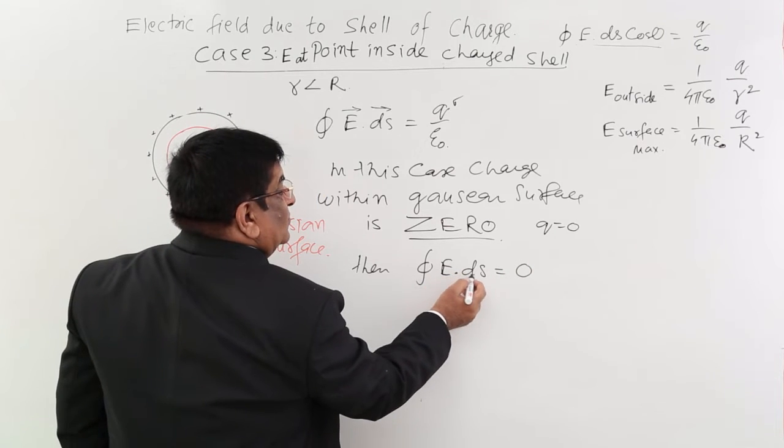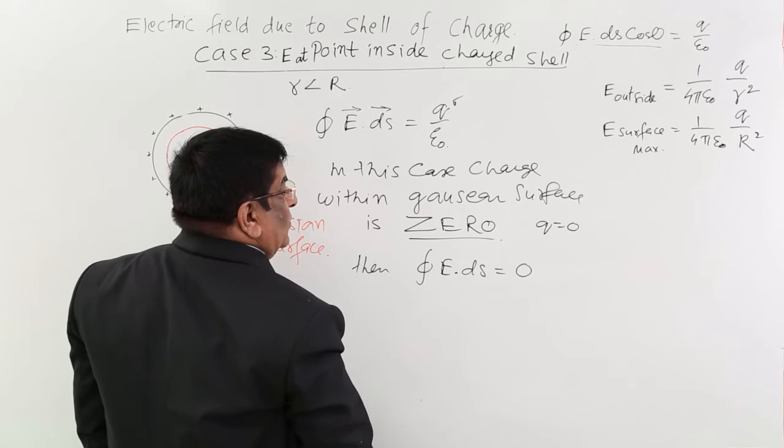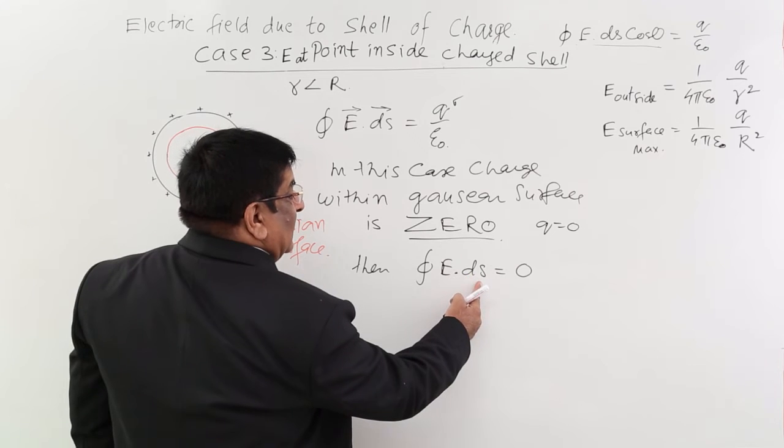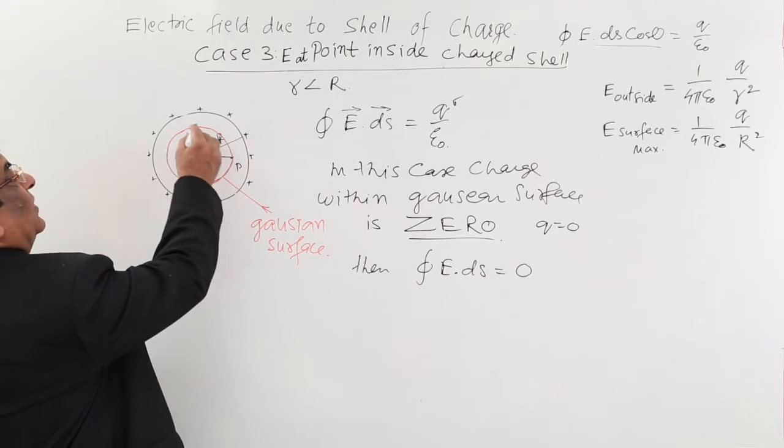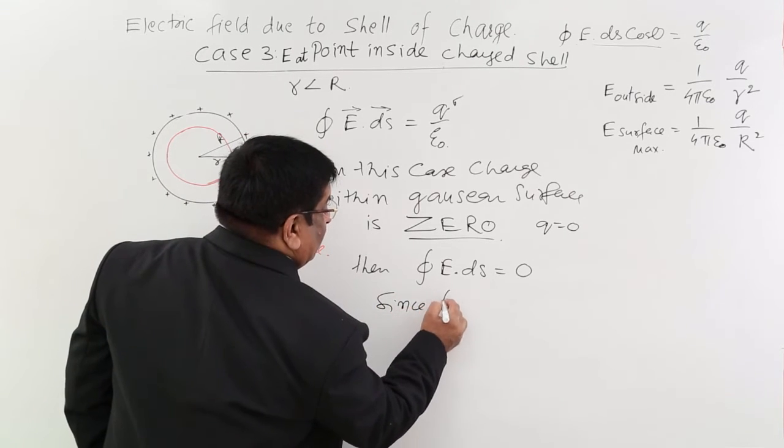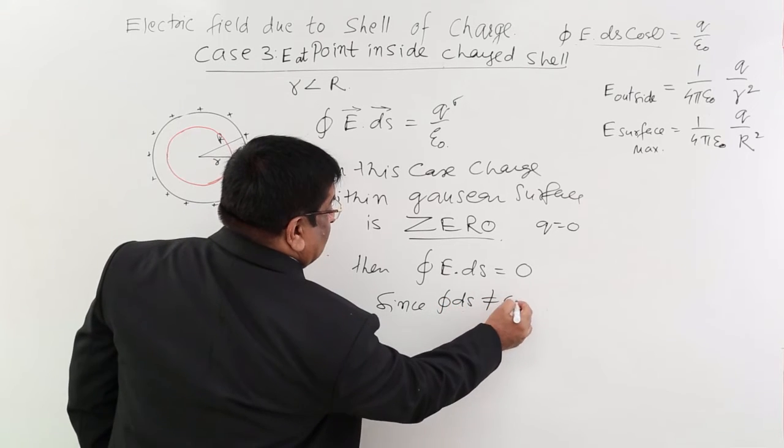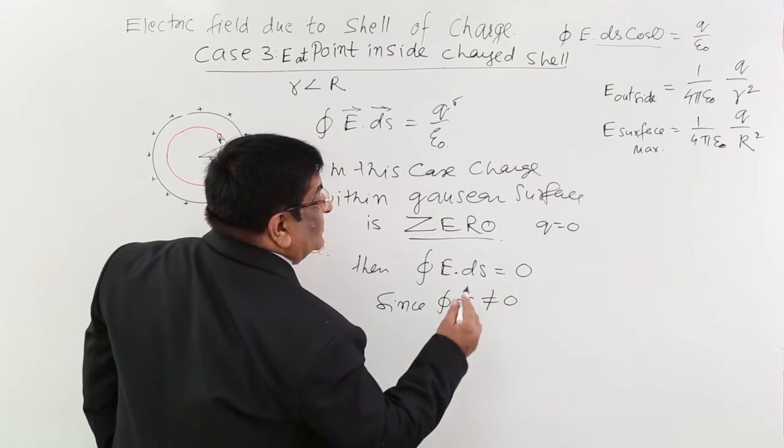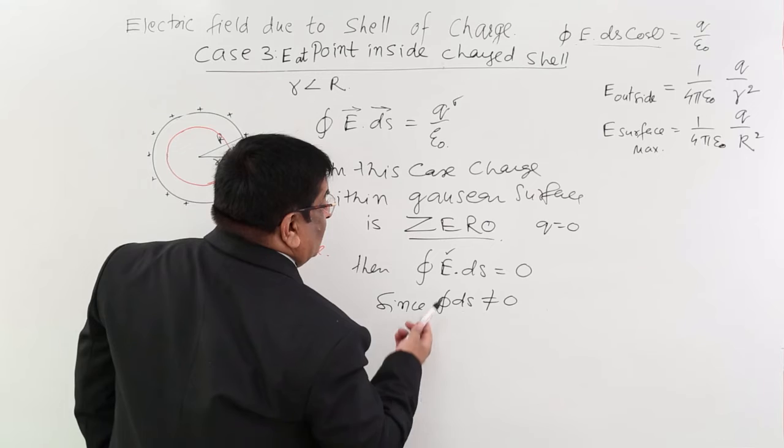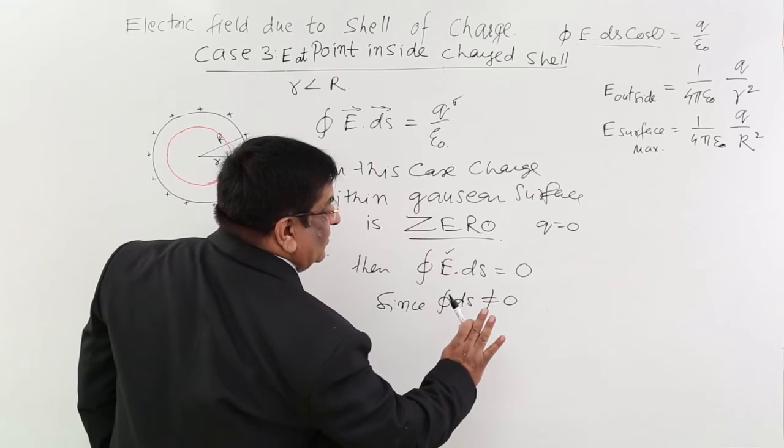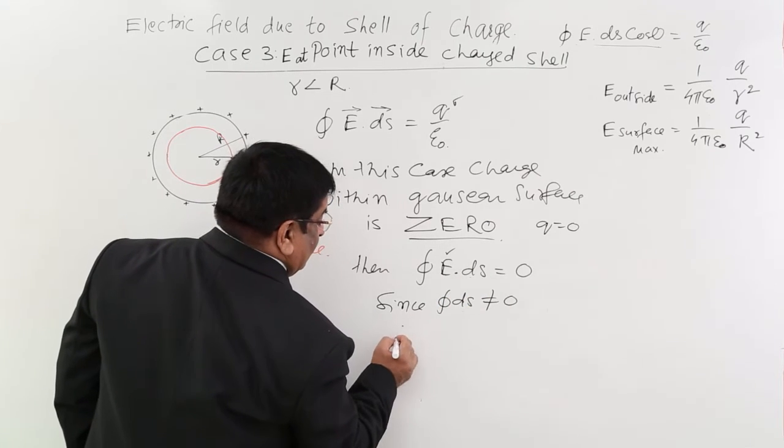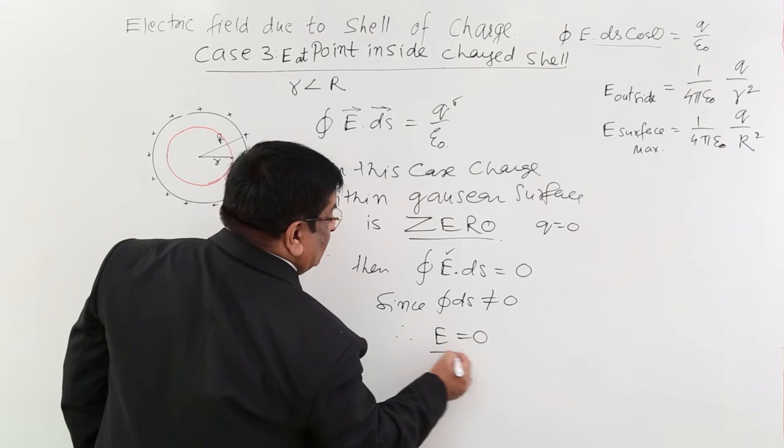So multiplication of these two quantities is zero. Either E should be zero or ds should be zero. Now what is ds? This is area. Integration of ds is not zero, area has certain finite value. So I will write mathematically: since integral ds is not zero, then who has to be zero? E has to be zero. Since ds is not zero confirmed, then E is zero. Therefore, E equals zero.